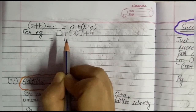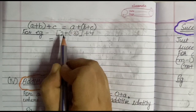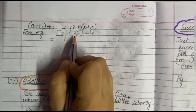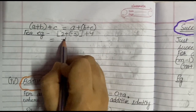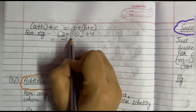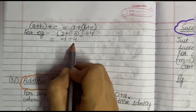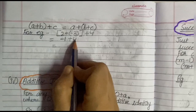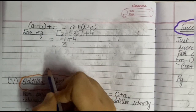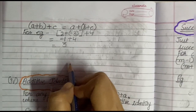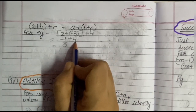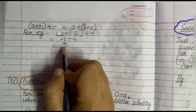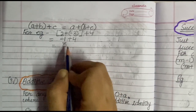We consider the sign of the larger number: out of 2 and 3, the larger number is 3, which is negative. So the bracket gives minus 1. Now minus 1 plus 4: one is negative and the other is positive, so we subtract — 4 minus 1 gives 3. The larger number is 4, which is positive. So the LHS answer is positive 3 or simply 3.